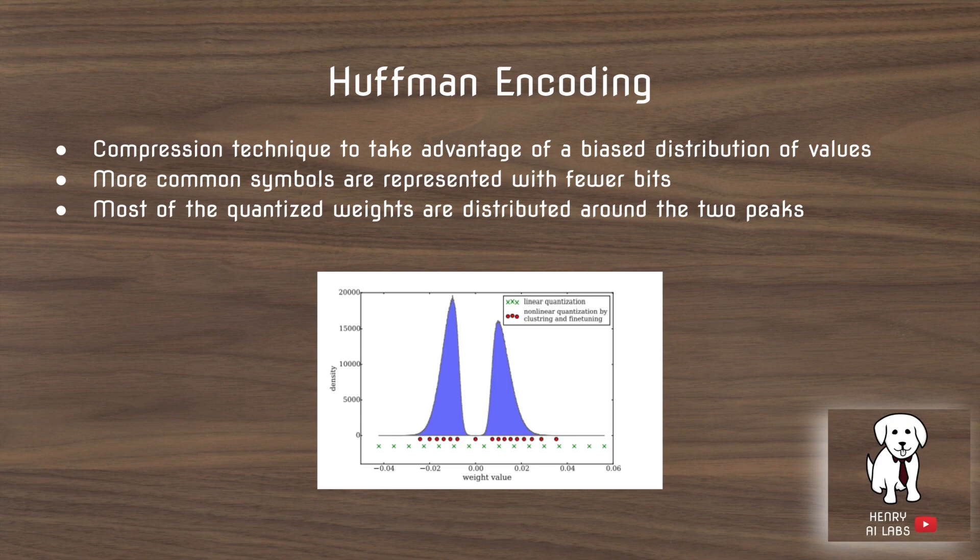What you might do is you would use like zero or zero one or something like that to encode for this really frequently occurring value and then you would use the longer bits to encode the rare values.